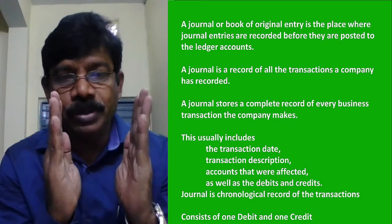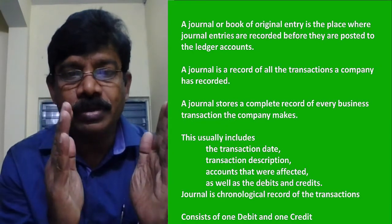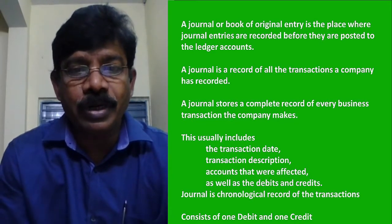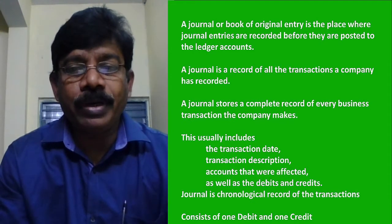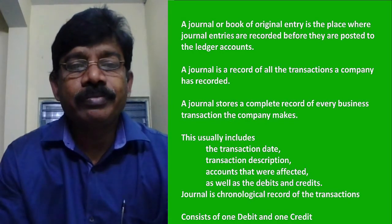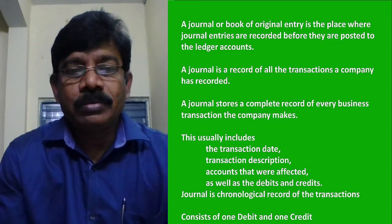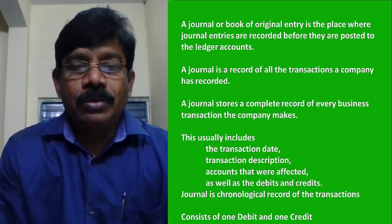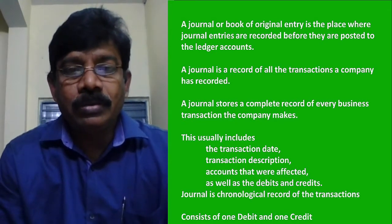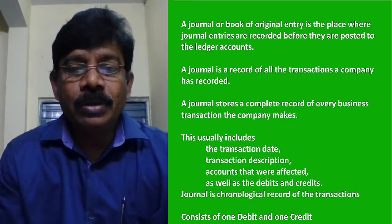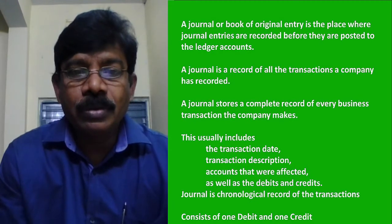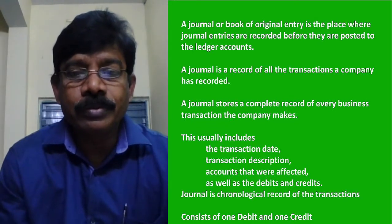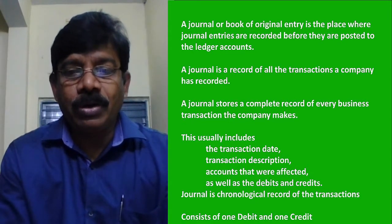All the journal entries of the company are recorded in that day book. That's why it is called the book of original entry. A journal stores a complete record of every business transaction that a company makes. This usually includes the transaction date, description — called narration — accounts affected (two accounts: one debit and one credit), as well as the debit and credit amounts. The journal is a chronological record of transactions.